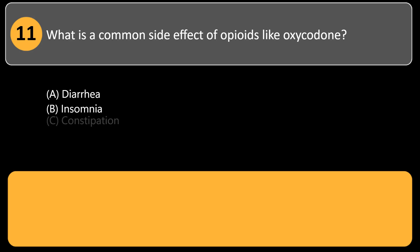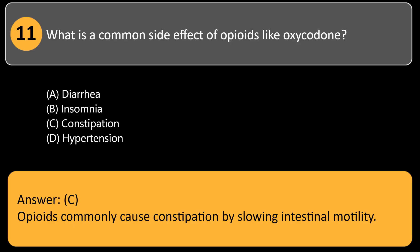What is a common side effect of opioids like oxycodone? A) diarrhea, B) insomnia, C) constipation, D) hypertension. Answer: C. Opioids commonly cause constipation by slowing intestinal motility.